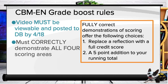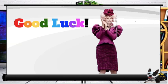You must correctly demonstrate all four scoring areas to get the choice of a reflection replacement or a five-point addition to your running total. Good luck — may the odds be ever in your favor.